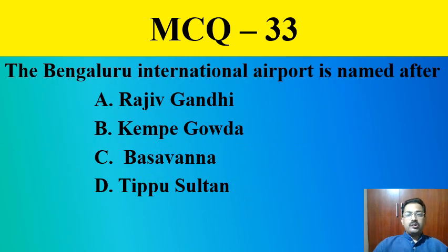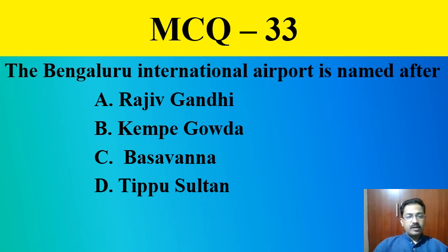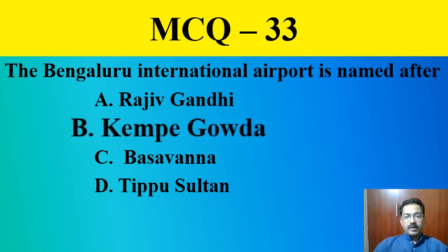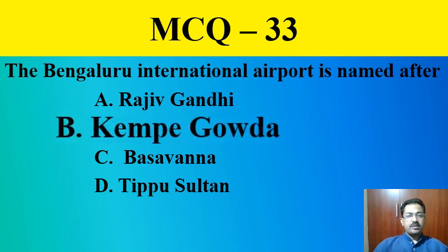MCQ question number thirty-three: The Bengaluru International Airport is named after — A. Rajiv Gandhi, B. Kempe Gowda, C. Basavanna, D. Tipu Sultan. This is a very easy question — the answer is Kempe Gowda, option B.